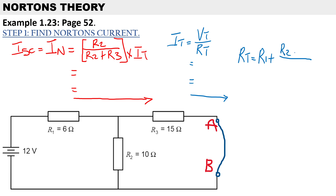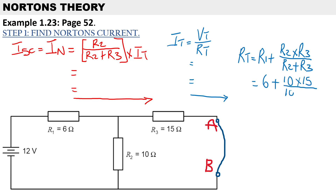For two resistors in parallel we use the product-sum rule, so it's R2 times R3 over (R2 plus R3). R1 is 6 ohms, and R2 and R3 in parallel is 10 times 15 over (10 plus 15), giving us a total resistance of 12 ohms.